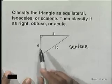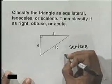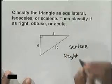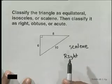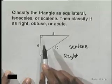Therefore, because this triangle contains a right angle, we say this is a right triangle. So we say our triangle is scalene because the sides are different lengths, and it's a right triangle because it contains a right angle.